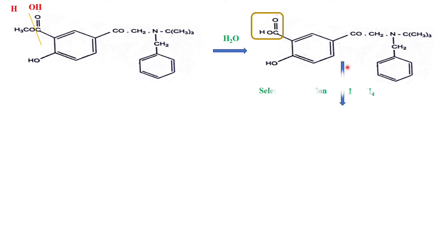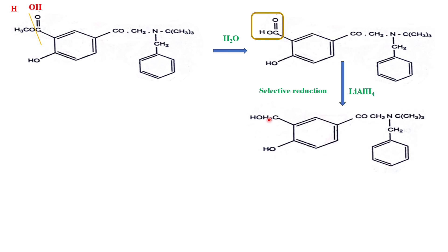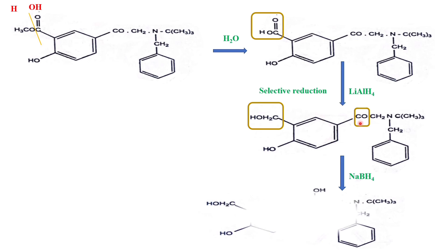Now we carry out selective reduction using lithium aluminium hydride. On selective reduction, the acid part is reduced and we obtain a primary alcohol. Then the compound undergoes further reduction using sodium borohydride. Here we have a ketone, and that ketone is reduced to give a secondary alcohol.